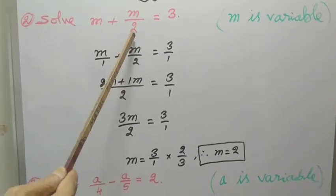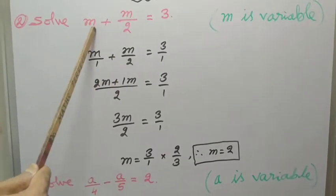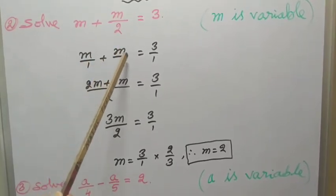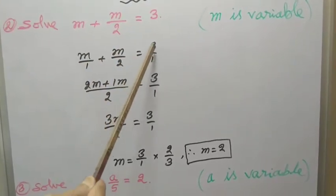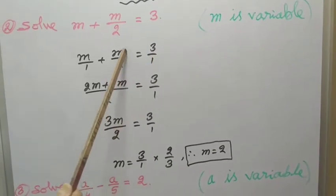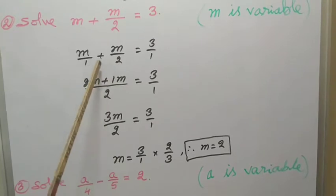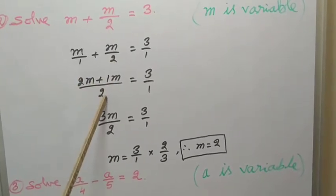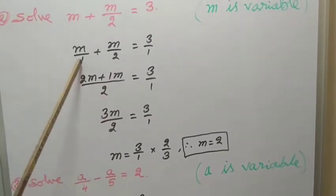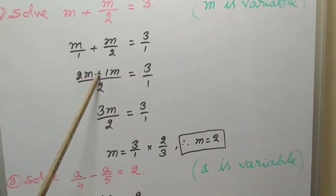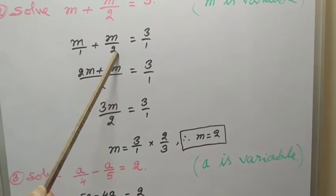M plus M by 2 equal to 3. Here, this denominator is there, so take for this also denominator: M by 1 plus M by 2 equal to 3 by 1. For left-hand side, take the LCM for the denominators. 1 and 2, LCM is 2. Divide this 2 by 1, quotient is 2, 2 into M, 2M plus.